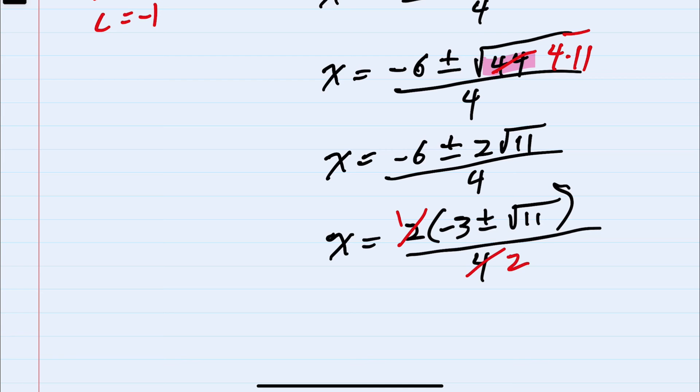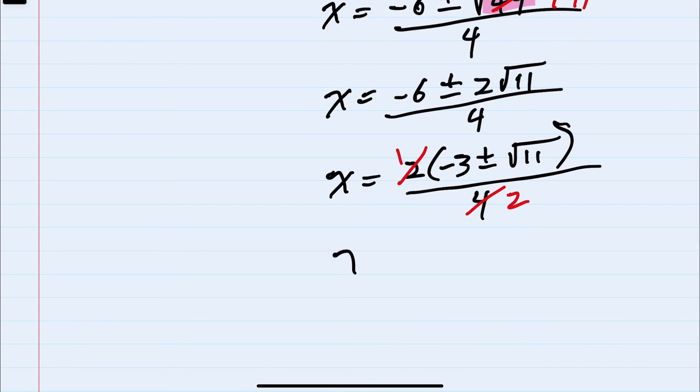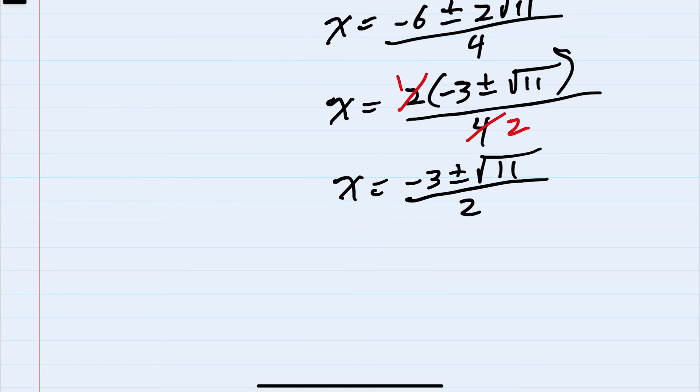So my final 2 answers here are that x equals negative 3 plus or minus the square root of 11 all over 2. If we were writing it as 2 solutions, we could use the positive negative 3 plus the square root of 11 over 2 and the negative negative 3 minus the square root of 11 over 2 as our two solutions.